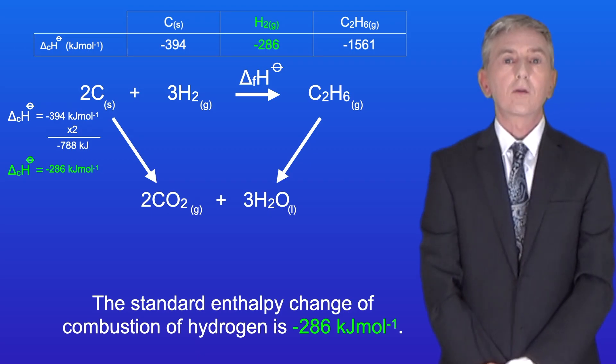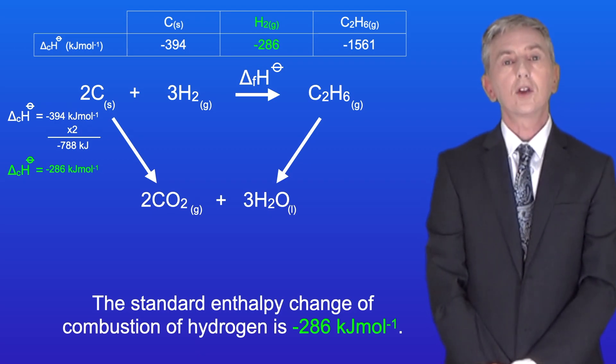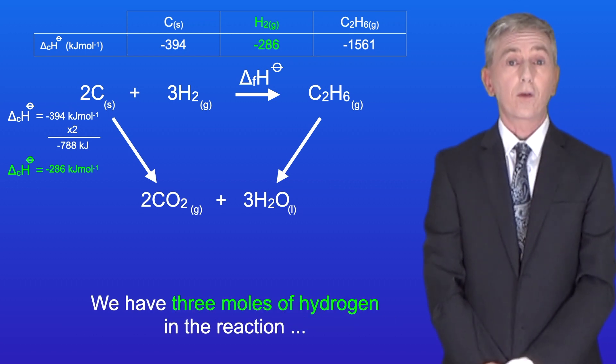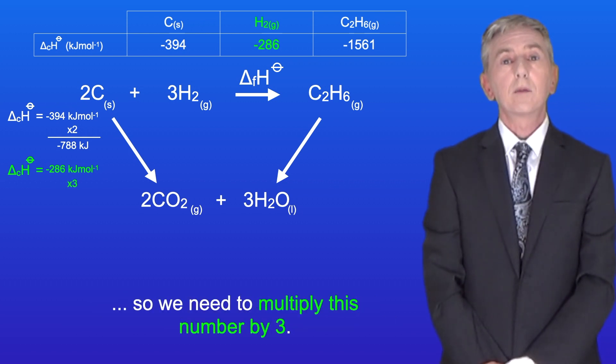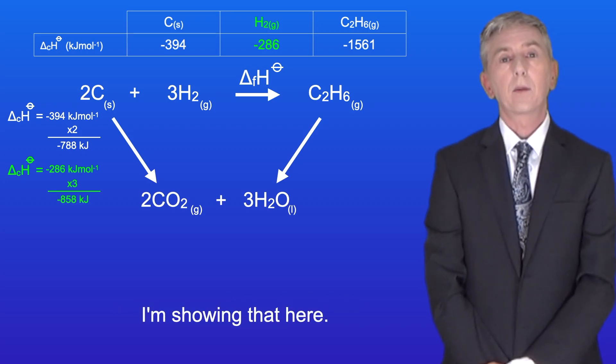The standard enthalpy change of combustion of hydrogen is -286 kJ/mol. We have three moles of hydrogen in the reaction, so we need to multiply this number by three.